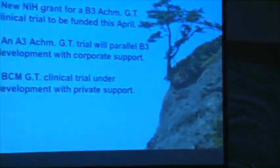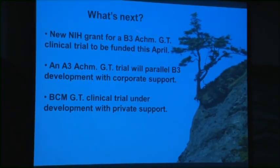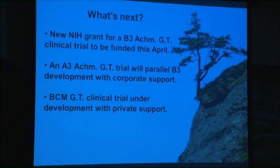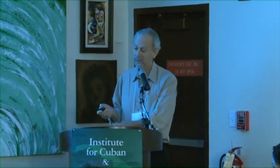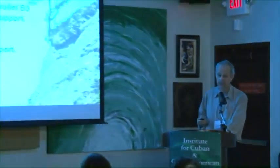What's next? Three things. According to NIH, we will get a gene therapy clinical trial initiated for CNGB3 achromatopsia in April. Since CNGB3 and CNGA3 achromatopsia patients have essentially identical clinical presentations, CNGA3 patients will be characterized during the CNGB3 natural history study, and the CNGA3 clinical trial will proceed in parallel with CNGB3, funded through corporate support. The BCM gene therapy clinical trial is under development with private support. At least three major cone-specific foveal diseases have a future in the clinic.